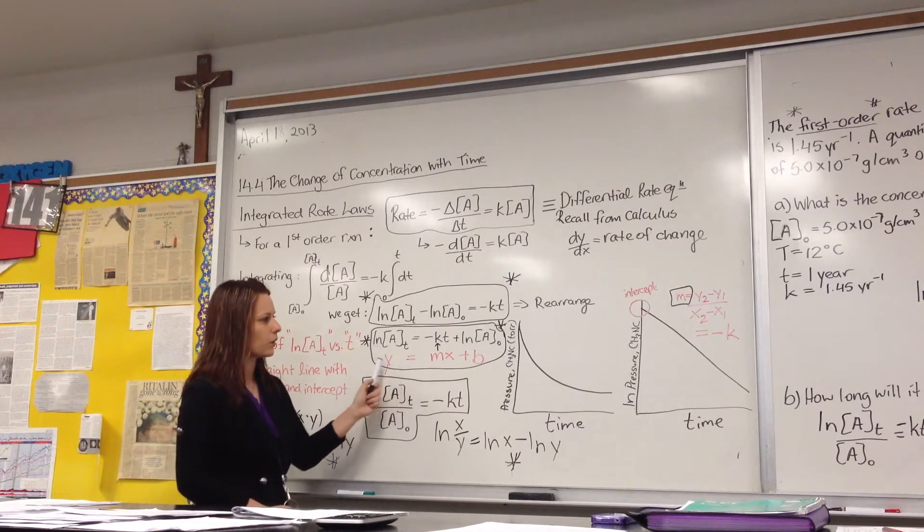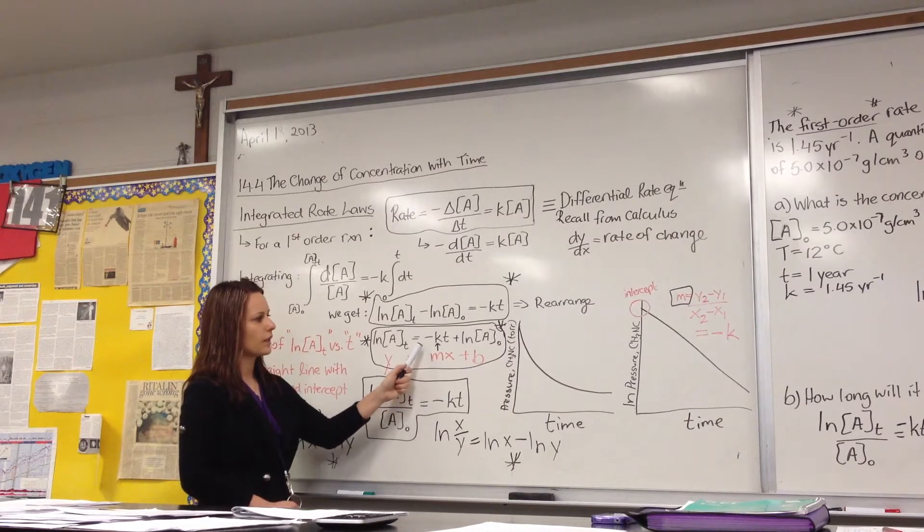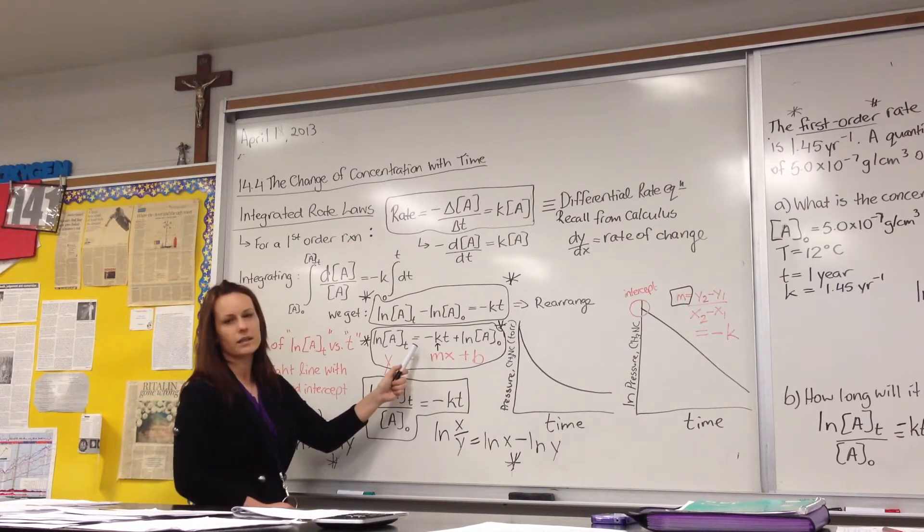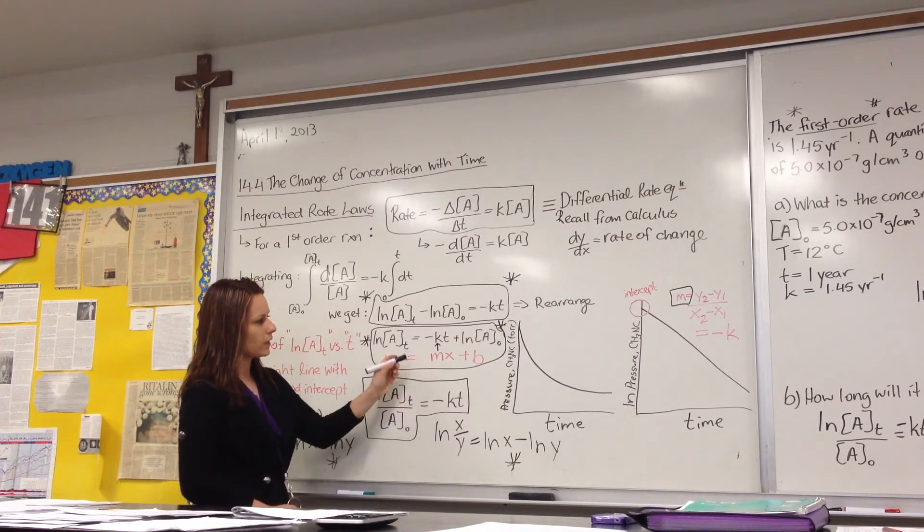And if you were to graph this equation of the straight line, the M, which is your slope, is the negative of your K, negative of your rate constant.